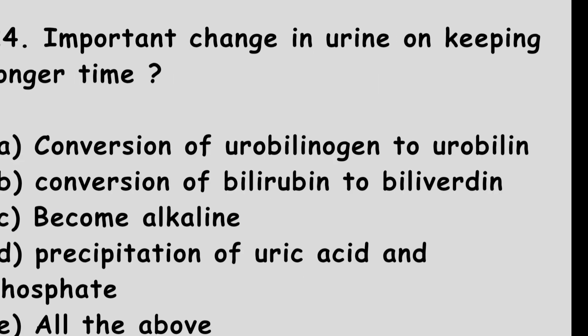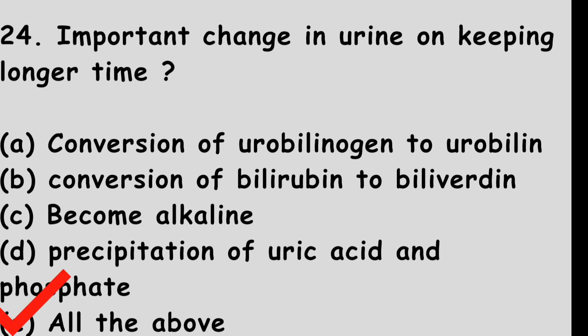Question number 24: Important changes in urine on keeping for a longer time. Option A: Conversion of urobilinogen to urobilin. Option B: Conversion of bilirubin to biliverdin. Option C: It becomes alkaline. Option D: Precipitation of uric acid and phosphate. Option E: All of the above. The right answer is option E, all of the above. All these changes will occur in urine on keeping for a longer time.